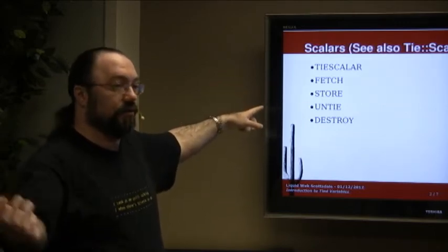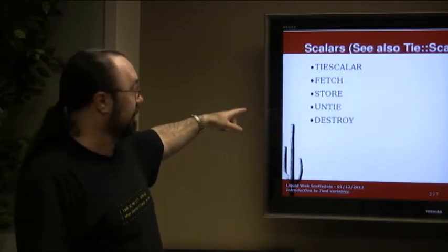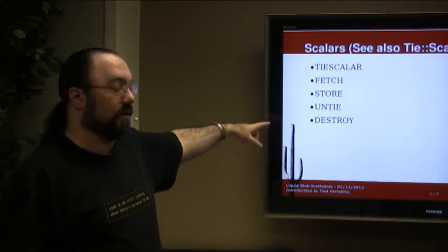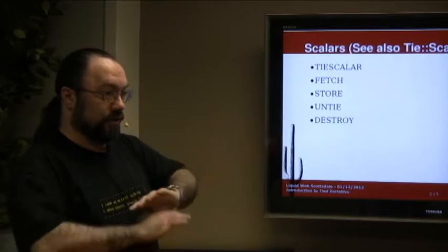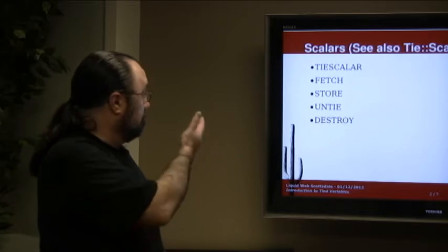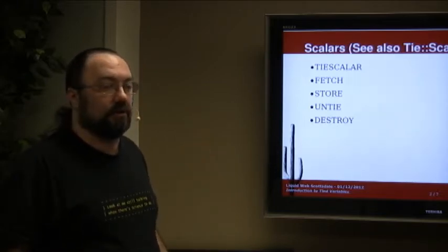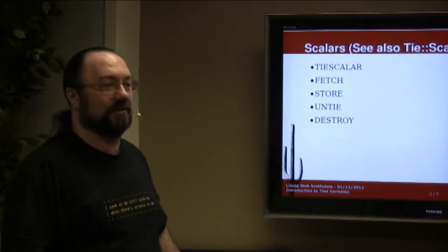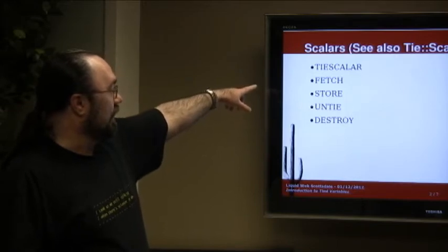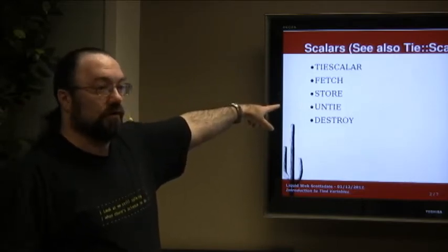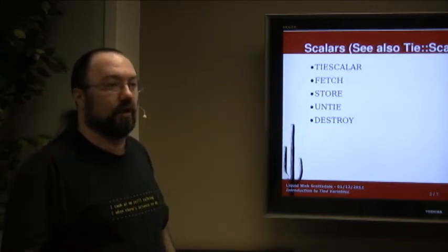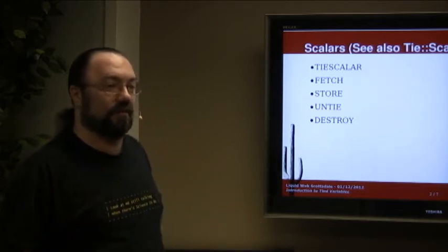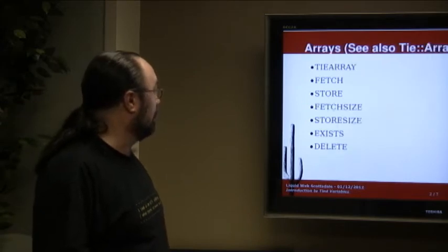So first you've got tie scalar, which is basically the equivalent of new. You've got fetch because you can get information out of a scalar. You've got store because you can put stuff into a scalar. You've got untie when you want it to no longer behave like a magical variable and you just want it to be a normal variable. And you've got destroy, which basically destroys everything when you're done with it. Scalar is obviously the easiest one. If you wanted to create a class that has a read-only scalar, basically what you could do is you could make fetch work, but on store you could have it do a warning, have it throw an exception, whatever you want to do and say hey you can't change this value. Or you could have it maybe set it once and then once it's been set don't let it change anymore. That's just an example of something you could do.